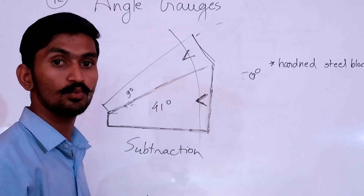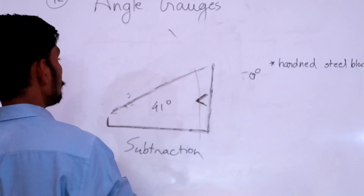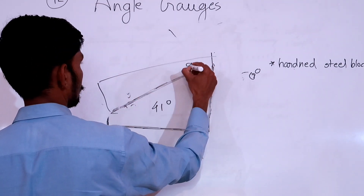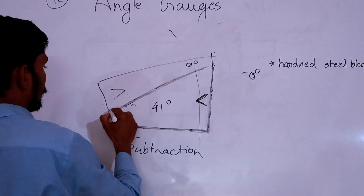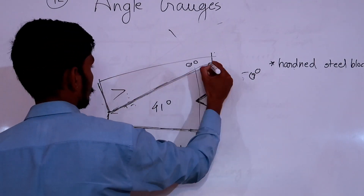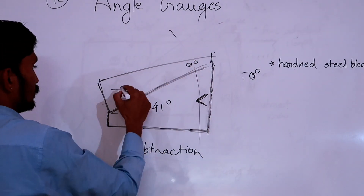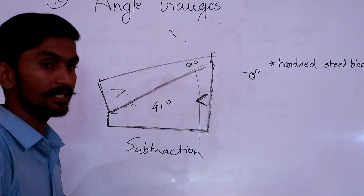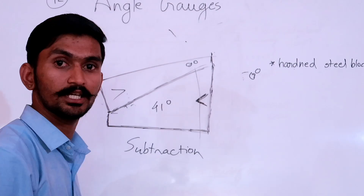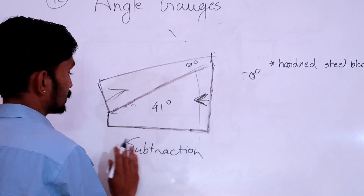For the subtraction case, we keep this angle gauge but change its direction. The angle gauge was positioned like this in the addition case, and now the direction has changed. In the addition case, both gauges face the same direction. In the subtraction case, the opposite line is here — this means subtraction.